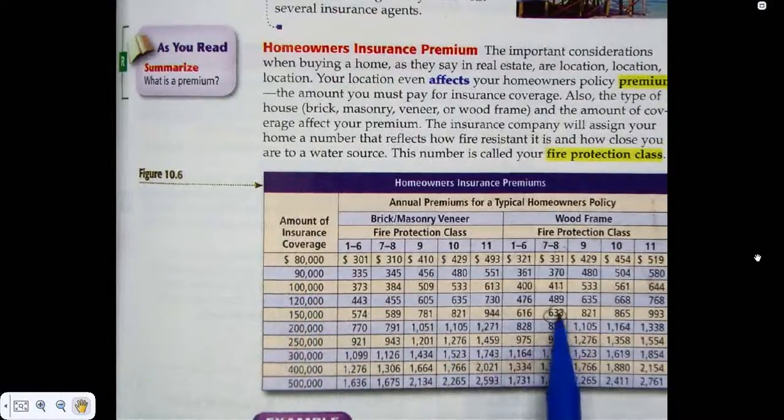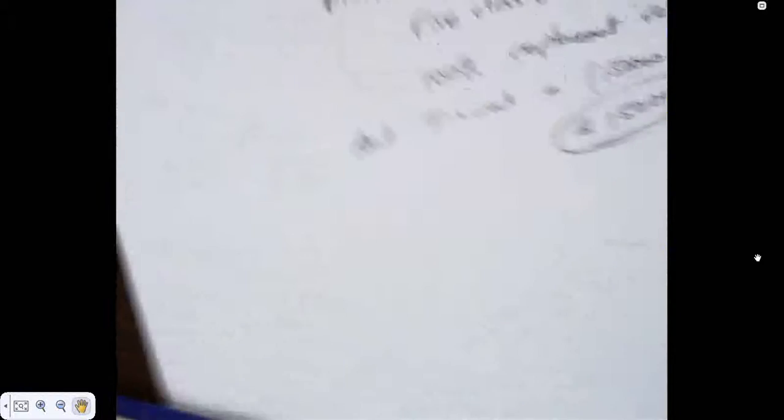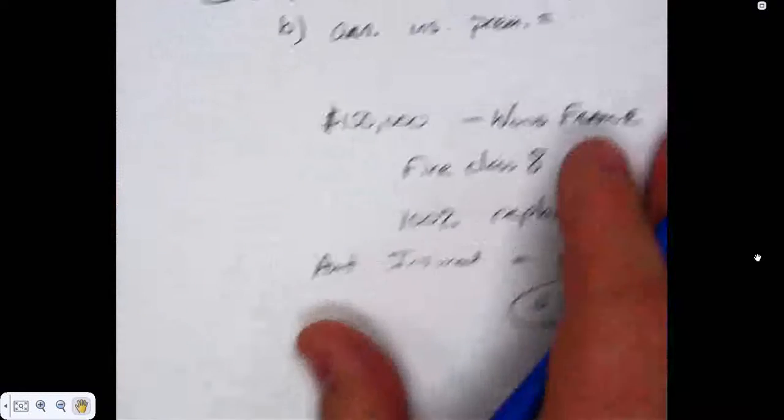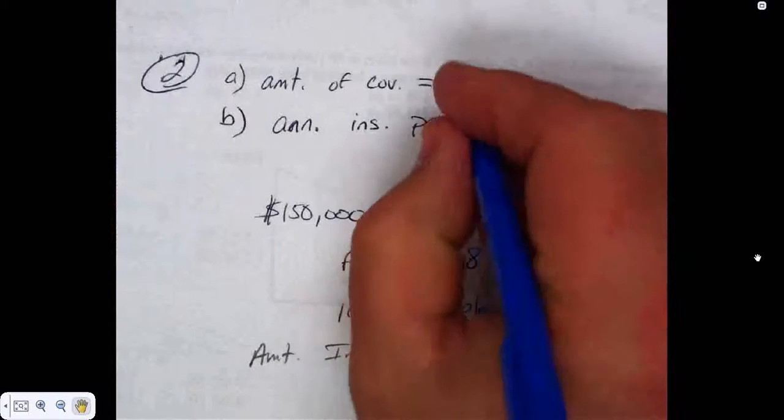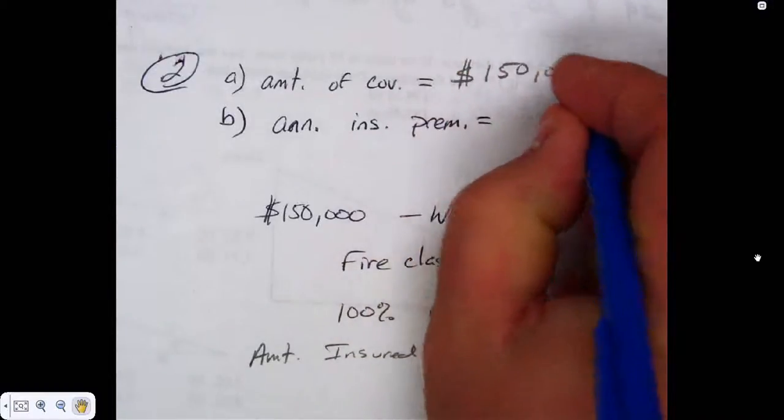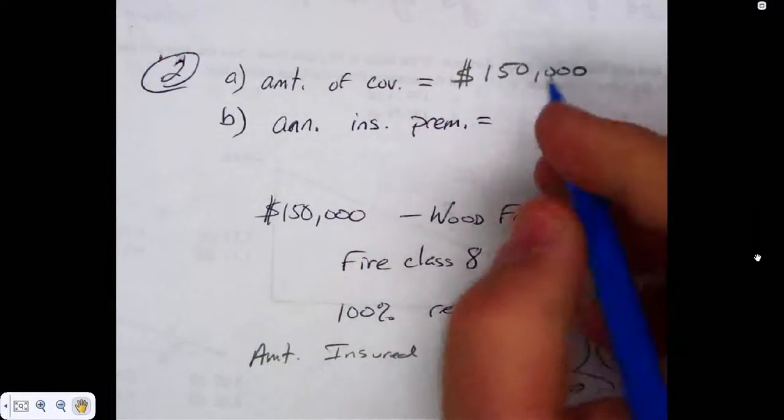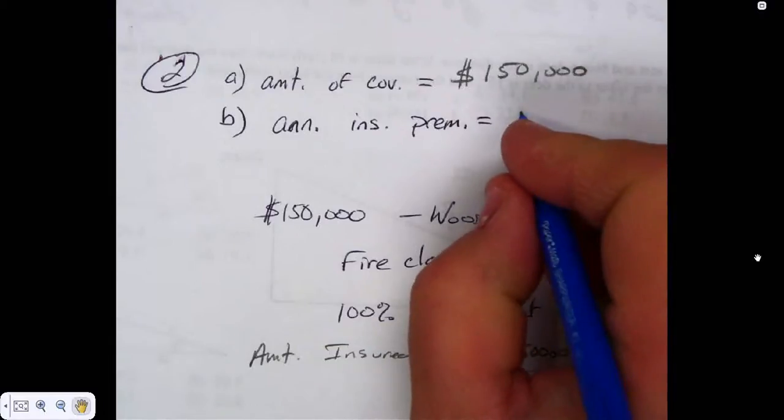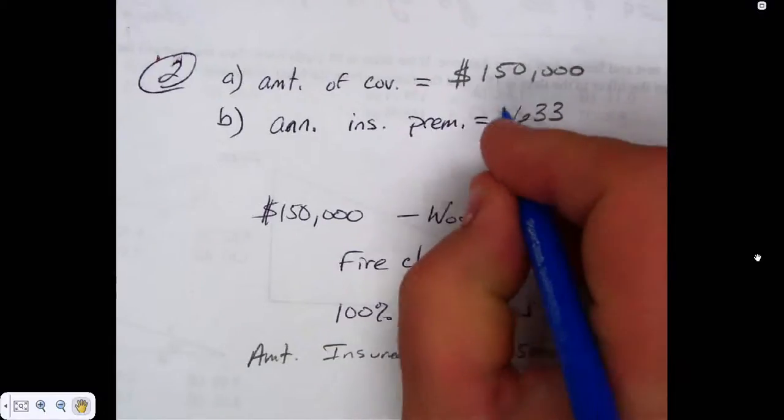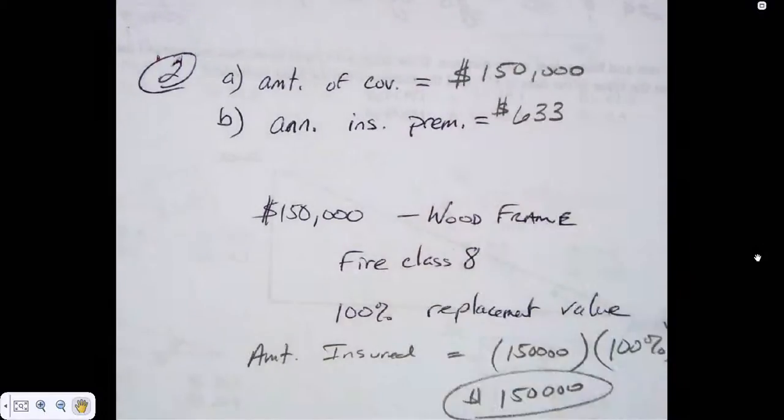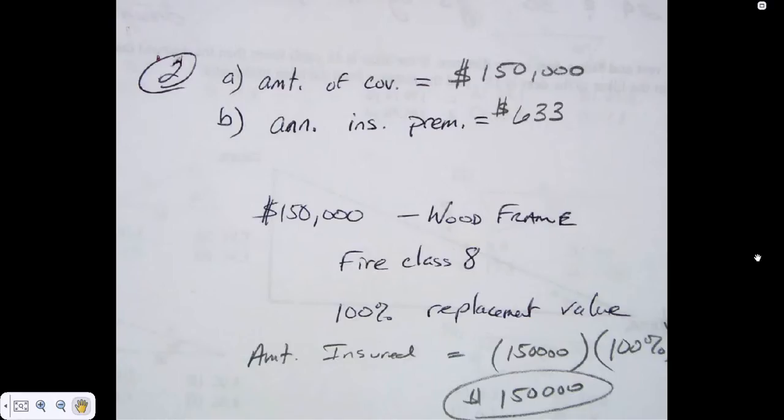And so the premium is what? $633. So the amount covered is what? $150,000. That's why they asked that as A because you have to find that to go to the table. Annual insurance premium, $633. Not very much, is it?